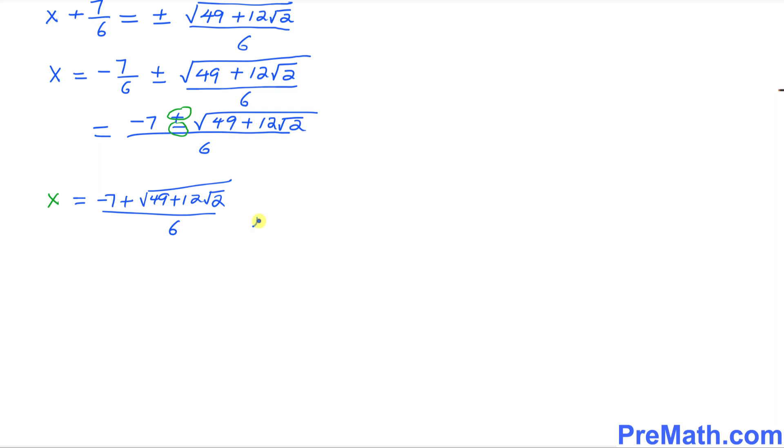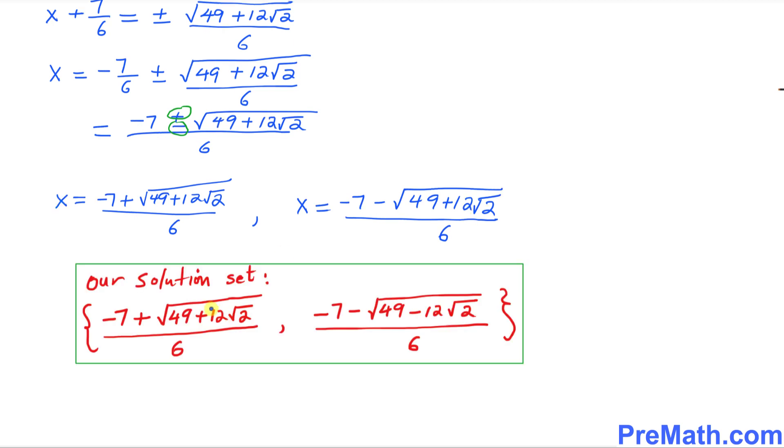That is one of the solutions and the second solution is going to be x equals (-7 - √(49 + 12√2))/6. And here I put my solution in a solution set. You can see that and that is our answer.